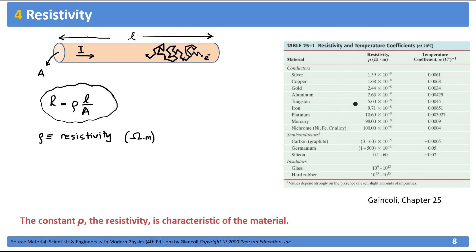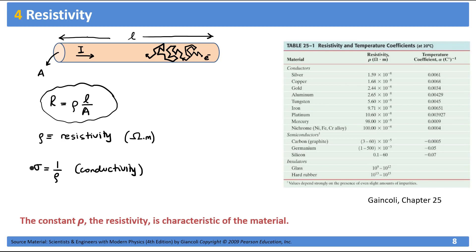The smaller the resistivity, the better conductor a material is. Sometimes another quantity called conductivity is used to describe how good a conductor a material is, which is simply one over the resistivity. Its unit is therefore ohm·meters to the minus one. The larger the conductivity, the better conductor the material is.